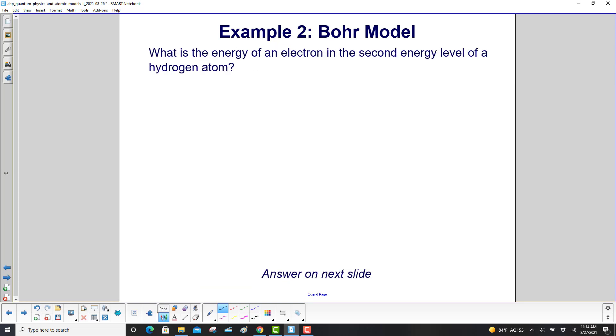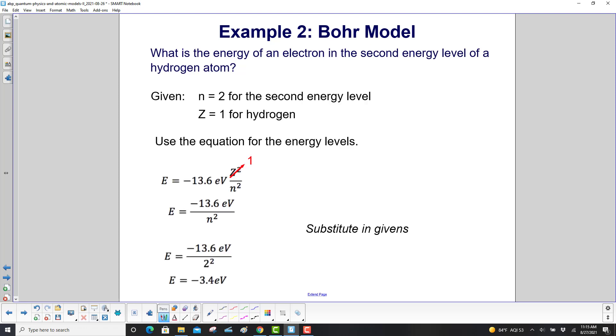What is the energy of an electron in the second energy level of a hydrogen atom? n equals two because we're looking for the second energy level, and z equals one for hydrogen. So we'll use the equation for the energy levels, which is minus 13.6 electron volts times z² over n². z equals one. So we have the energy is minus 13.6 over n². Substitute n equals two, and we get an energy of negative 3.4 electron volts.